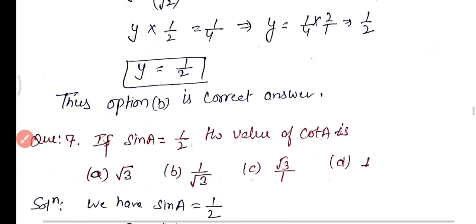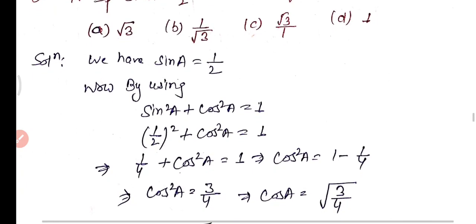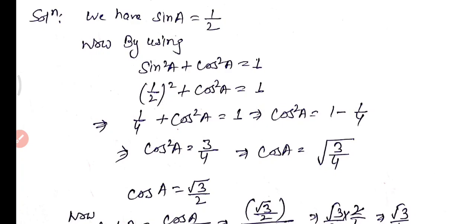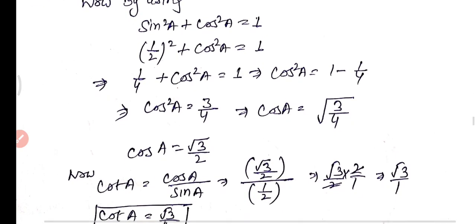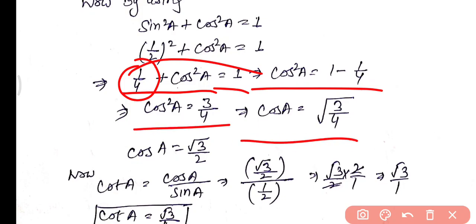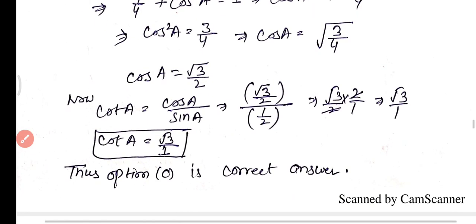Question 7: If sin A = 1/2, find cot A. Using the identity sin²A + cos²A = 1: (1/2)² + cos²A = 1 → cos²A = 1 − 1/4 = 3/4 → cos A = √3/2. cot A = cos A / sin A = (√3/2) / (1/2) = √3. Option C is the correct answer.